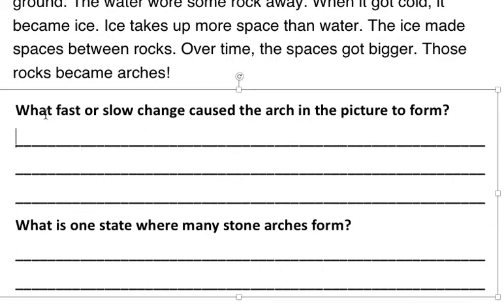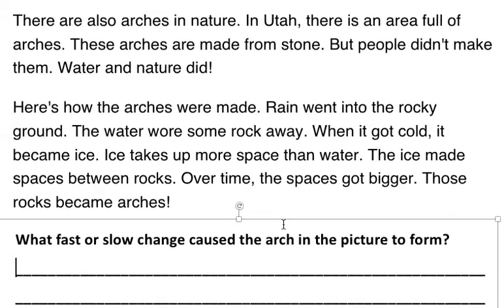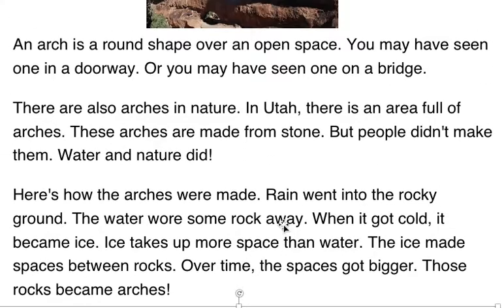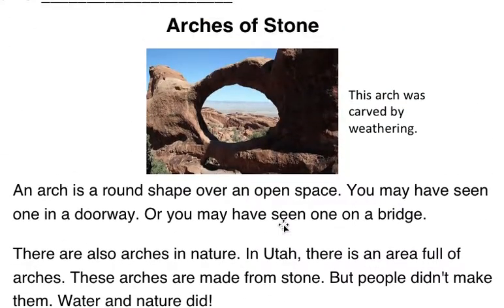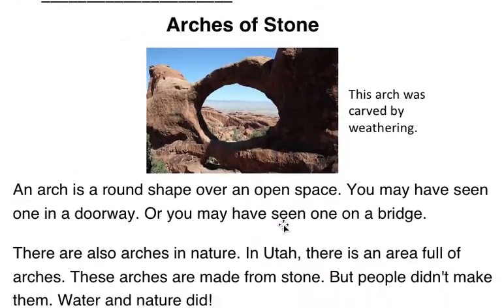So number one is, what fast or slow change caused the arch in the picture to form? Number two is, what is one state where many stone arches form? Let's read the passage and underline where you find the answer to those questions.